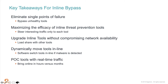A traditional switch, no matter how powerful, doesn't have the capabilities of what Gigamon provides. With span ports, you're mirroring port for port, burning a switch port for every span. With a tap at the ingress point, you avoid that misuse of ports. Gigamon ensures that your tools receive all traffic reliably.